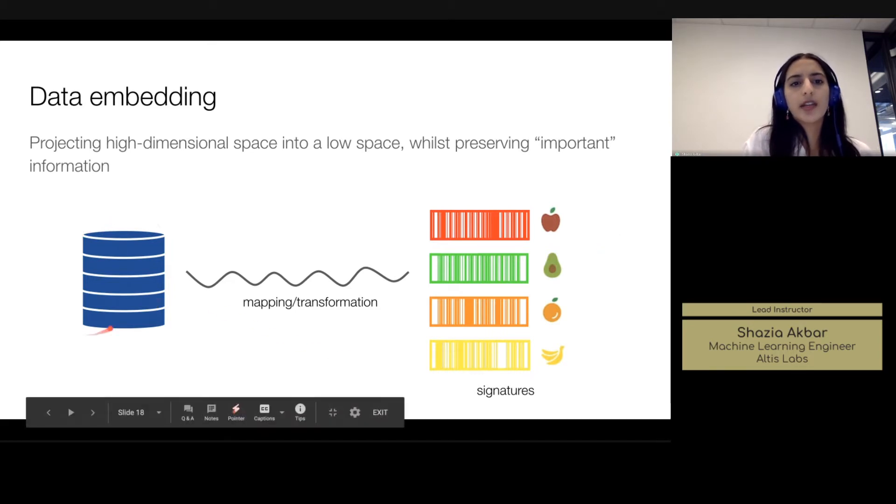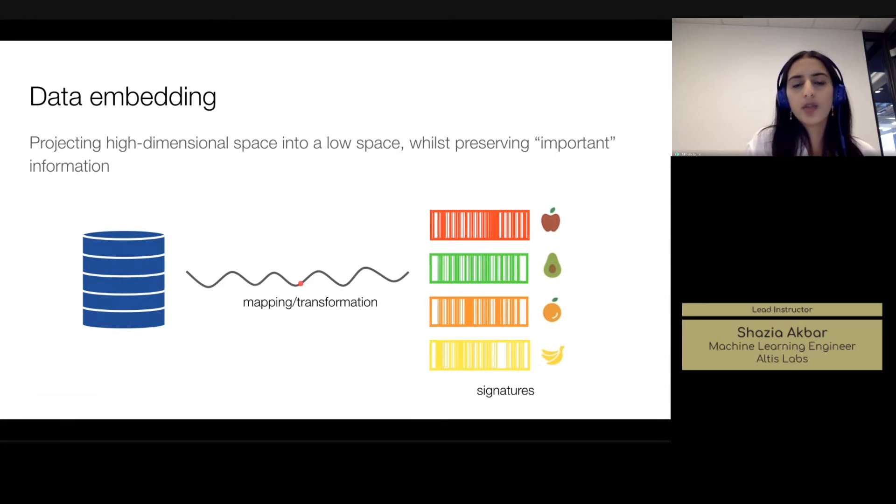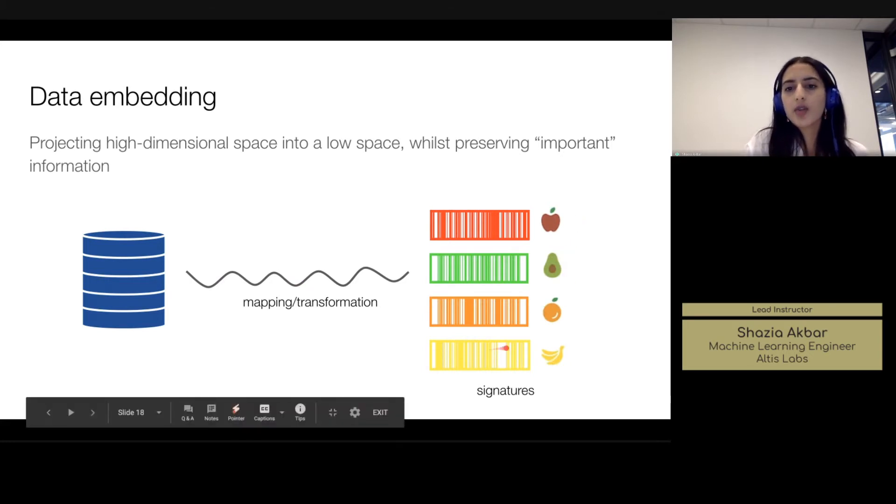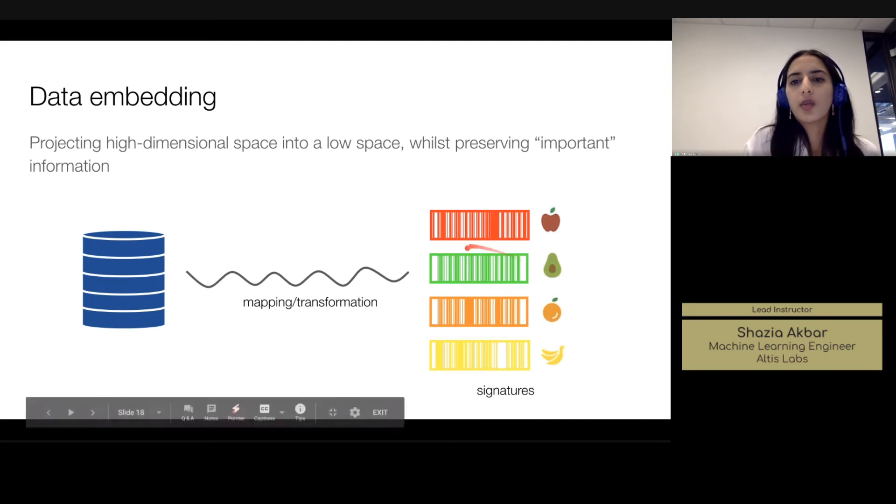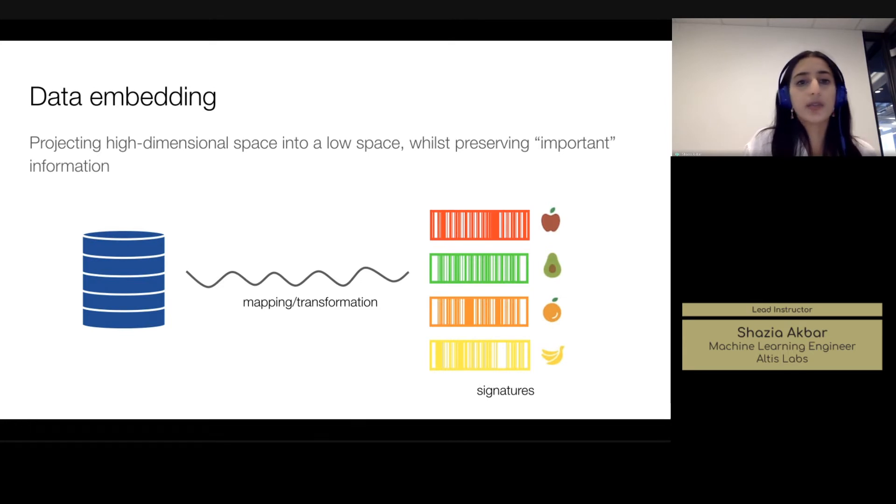So here you can see our data set, which may be say images of fruit, and we'll have some sort of transformation function here which will separate out these different types of fruit and essentially give them some sort of encoding or representation, which is that particular fruit signature. So we're mapping our raw pixel data or raw data to some sort of one hot encoding so that we can look them up later or even so that we can see where they lie in a slightly lower dimensional space.